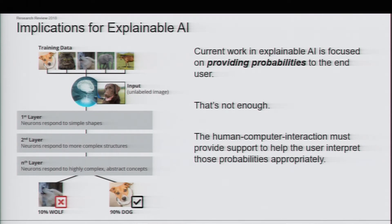When we talk about explainable AI, it's not sufficient to just give people probabilities. In fact, a lot of the work right now is focused on providing those probabilities, and I've hopefully demonstrated that that's not quite enough information for humans to make good judgments. It goes beyond showing which pixels are causing a probability — we need to help humans interpret those probabilities correctly. We need to think about human-centered design and human-computer interaction so that we can help people make good decisions from the information that AI is providing.